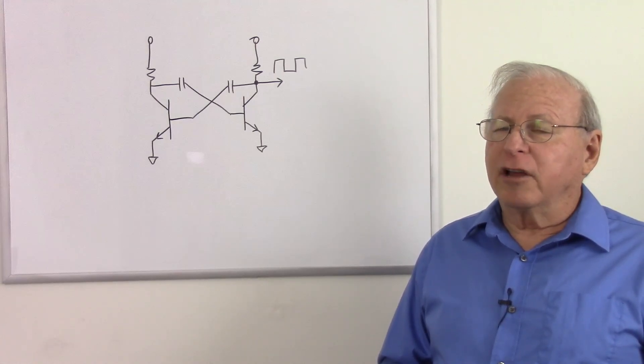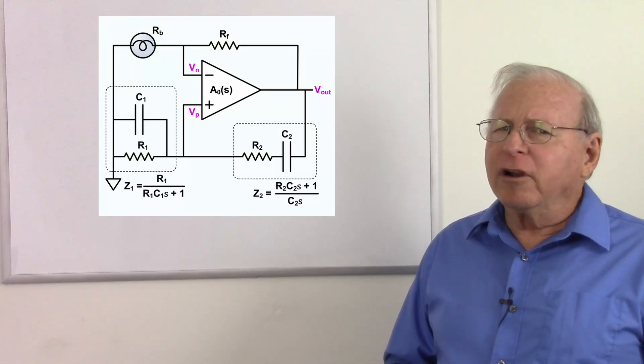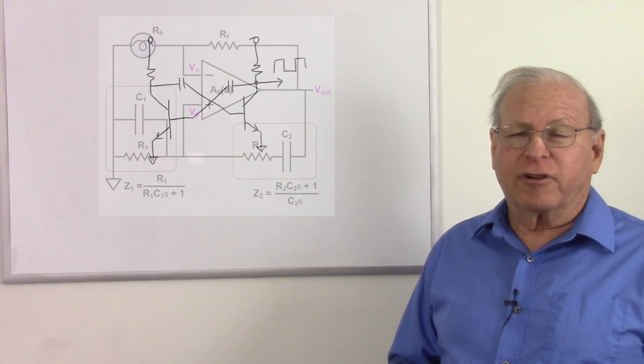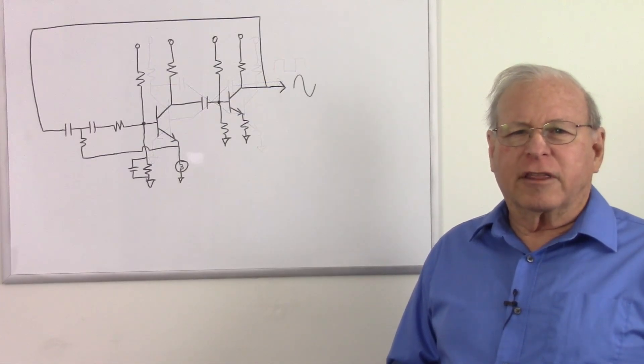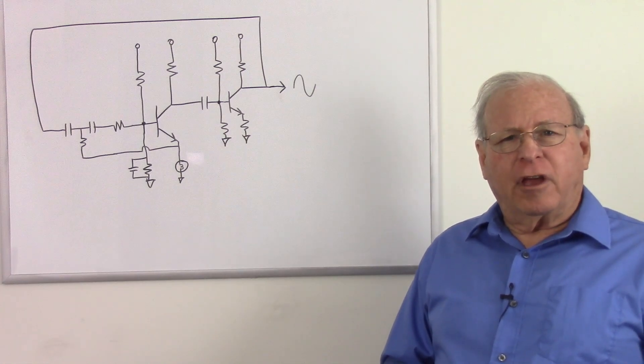Well, I know the Wien bridge oscillator, you usually see that with an op-amp, but I know they originally were made with vacuum tubes and then transistors. So let's take a look at that. And closely looking at the circuit, I see, ah,